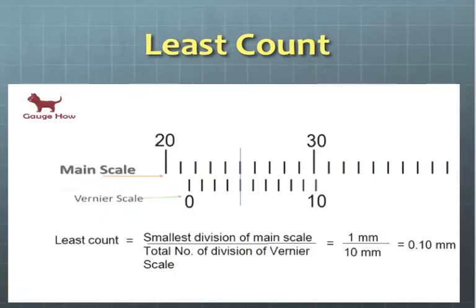Vernier caliper least count formula is calculated by dividing the smallest reading of the main scale with the total number of divisions of the vernier scale. LC of vernier caliper is the difference between one smallest reading of the main scale and one smallest reading of vernier scale which is 0.1 mm or 0.01 cm.